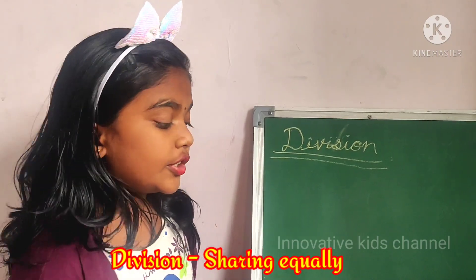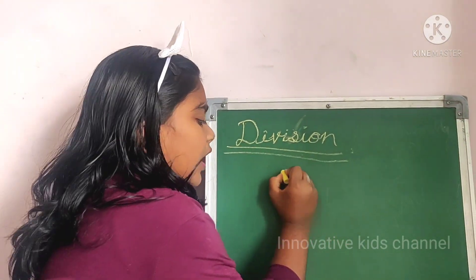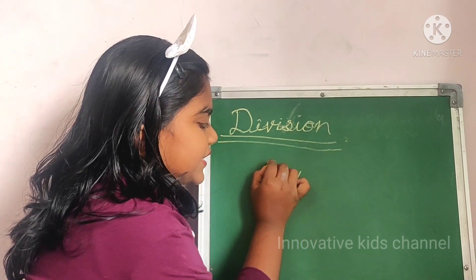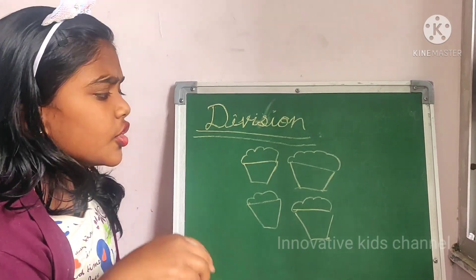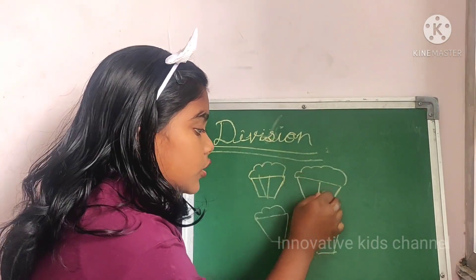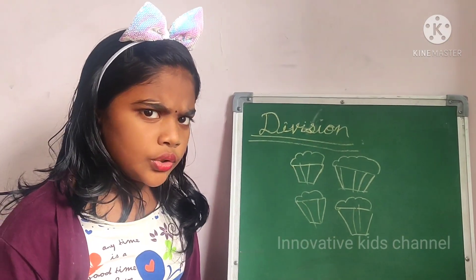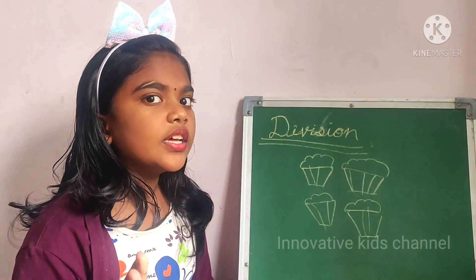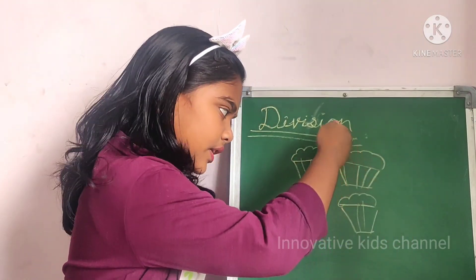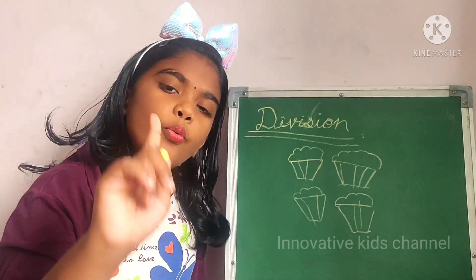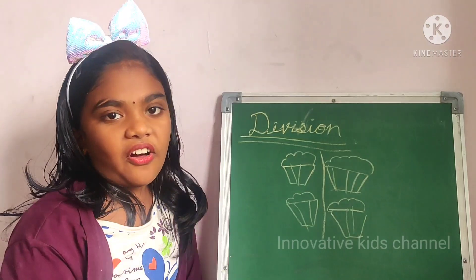Division is also about sharing equally. So now I will give you an example. Now we are having cupcakes — four cupcakes. So we have to divide them between two persons, for one person and another person. How will we do it and how will we share it equally? We can share like this, or we can share like this also. And now it is equally divided. So this is called division.